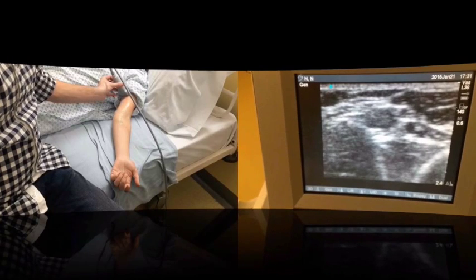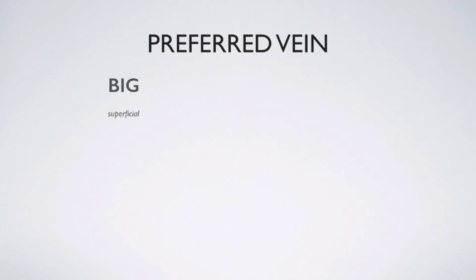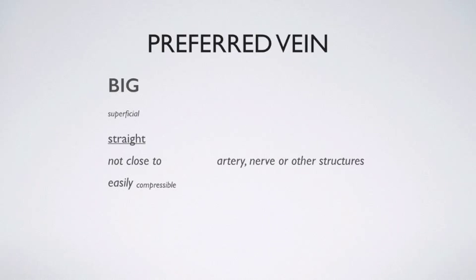Usually you will have several veins to choose from, but some will obviously be more suitable for cannulation than others. Choose a bigger vein that is more superficial and has a straight pathway without tortuosity, is not close to arteries or nerves, is easily compressible with a light downward pressure with the transducer, and is ideally not placed in an area of limb flexion.